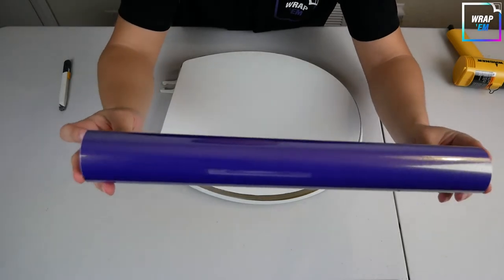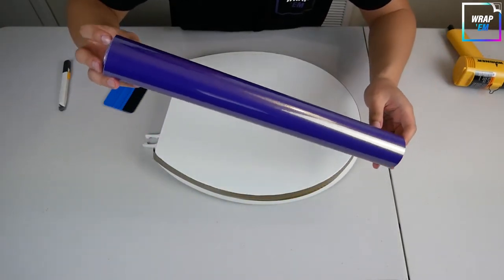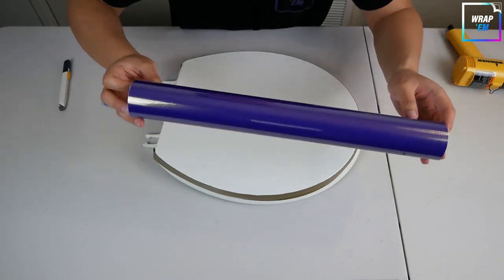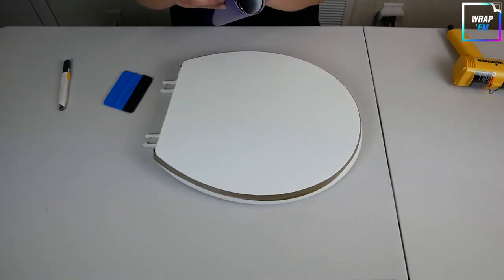For the top surface, we are going to wrap it with this galaxy purple vinyl. This galaxy purple vinyl has gold sparkles and a high gloss finish to it.